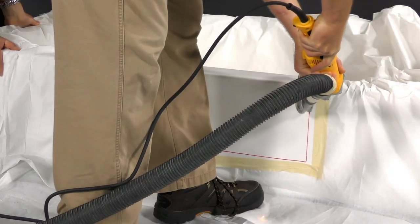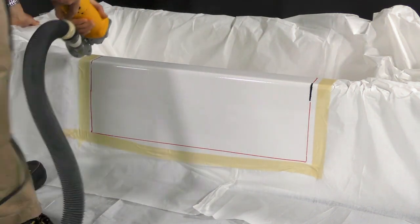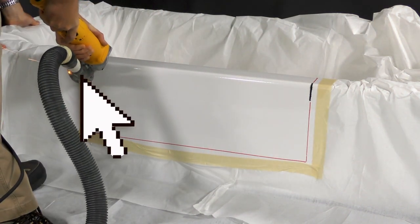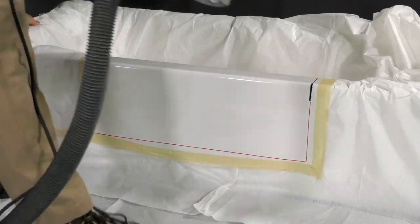Vacuum the dust and shavings as you cut the tub. As mentioned earlier, it is recommended to have a vacuum attachment on your grinder to minimize dust output.